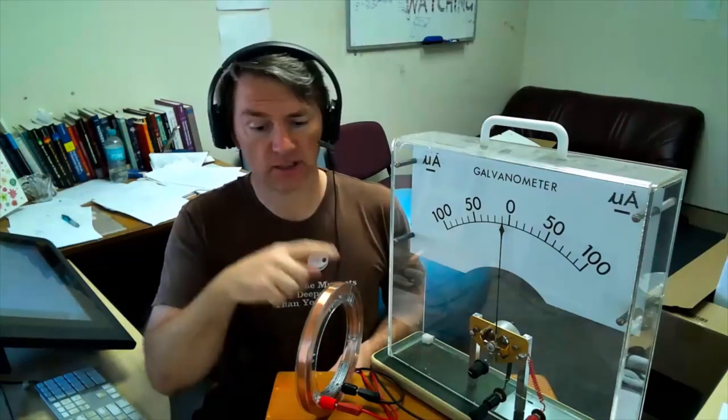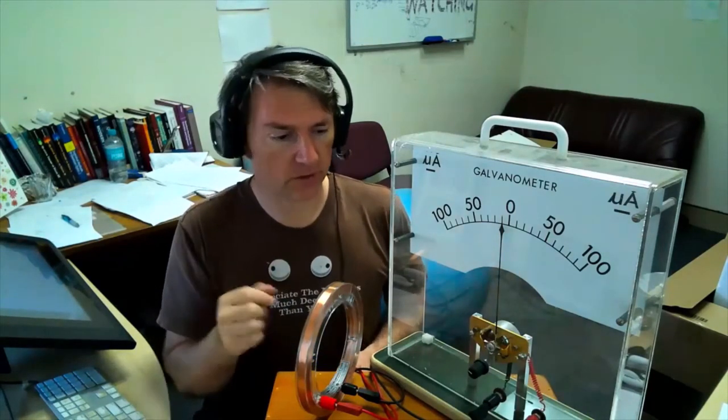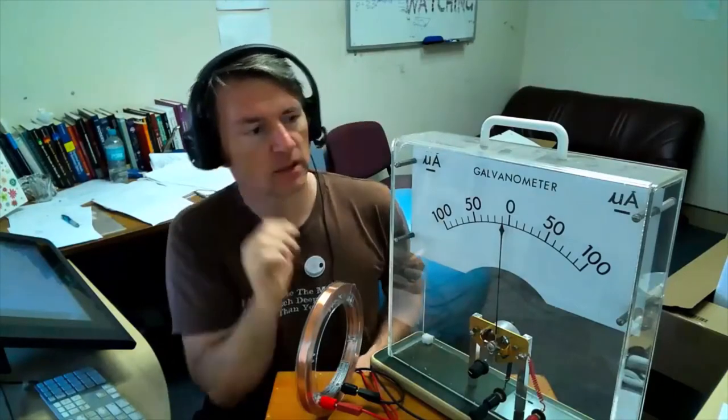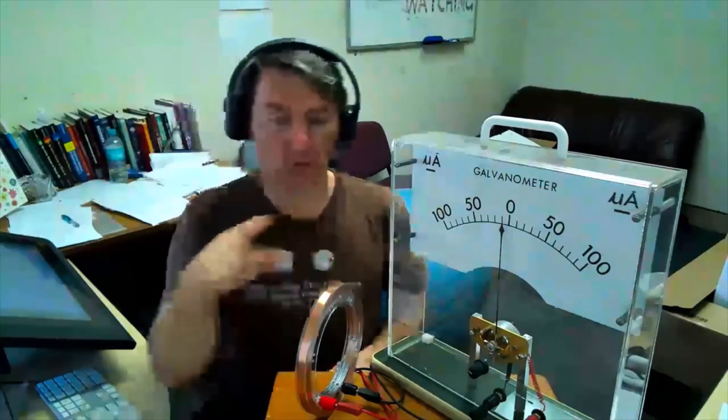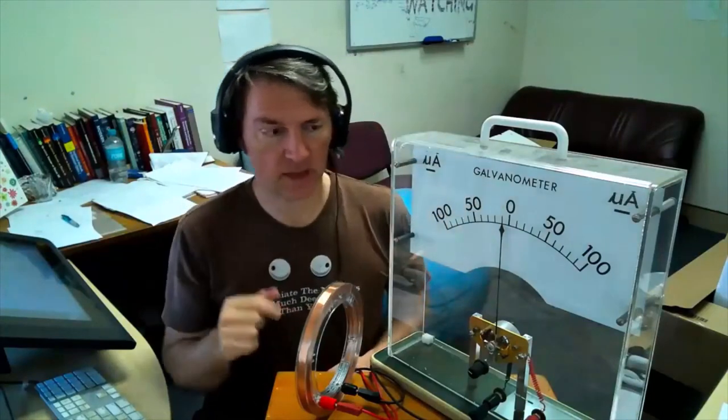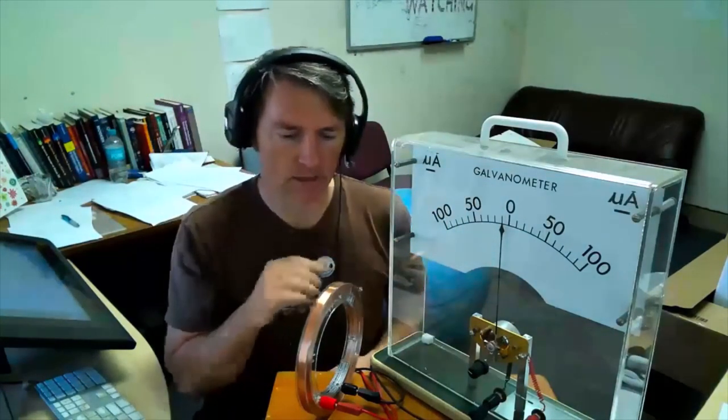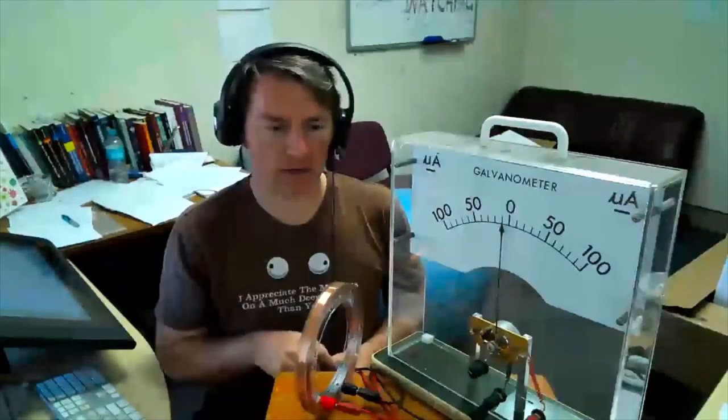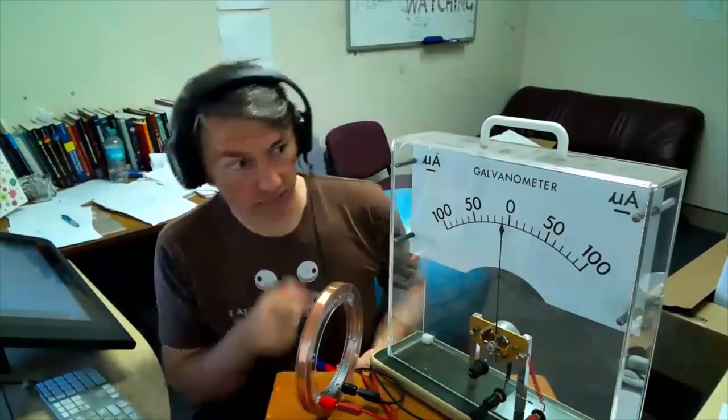So here I have a coil. It's a coil that goes around 400 times and it's connected to this ammeter. The ammeter measures current. So if any of these charges start moving around, we'll see because we'll see that needle deflect and the direction of the needle will tell us which way the current's going. Now there's lots of charges in there, but they're all still right now because there's no current flowing.